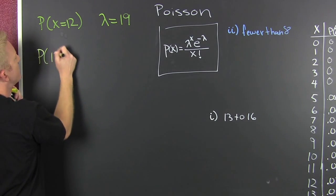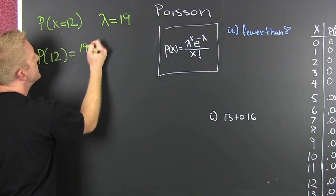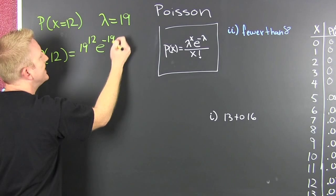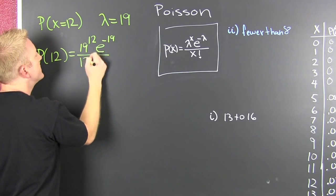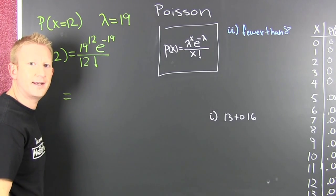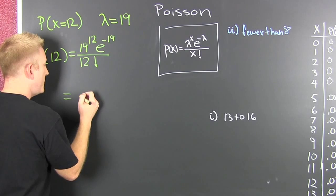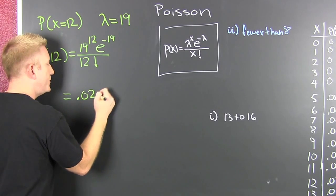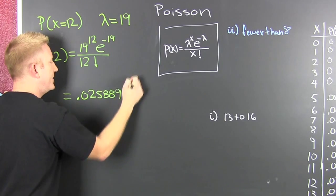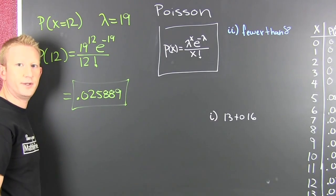So we're looking for the probability of 12. We write lambda 19 to the 12, e to the minus 19, divided by 12 factorial. Then you put that into your calculator and pound it out. When you do, you end up getting 0.025889. So there's about a two and a half percent chance that only 12 people use that computer.